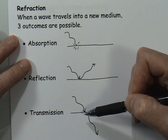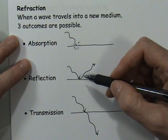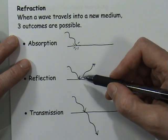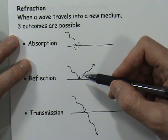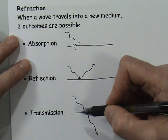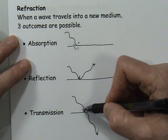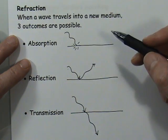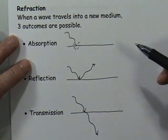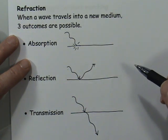It may be that one dominates, like with your bathroom mirror where reflection is pretty dominant. However, much of the light you see actually goes right through the mirror — it isn't reflected — and a small portion of it is actually absorbed by the mirror.